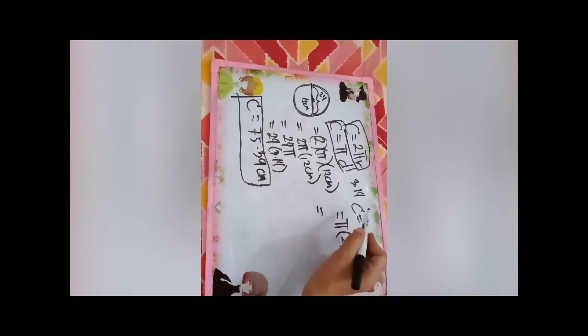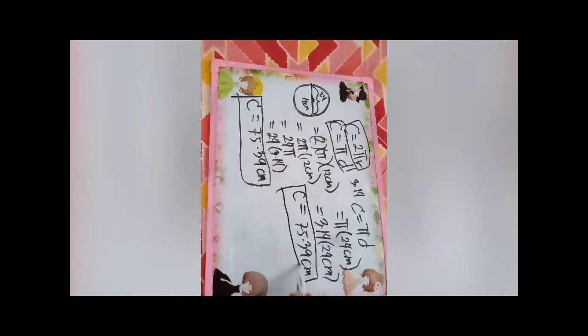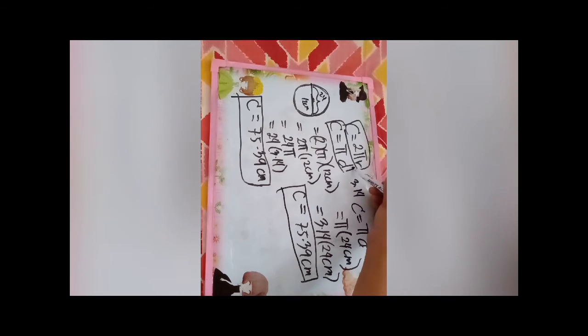So 12 times 2 equals 24 cm. So we use 3.14 as π. So 3.14 times 24 cm equals 75.39 cm. So if we use this formula and this formula, the result is the same.